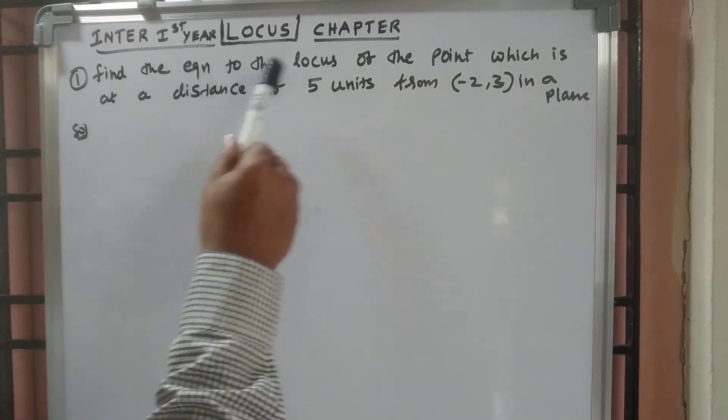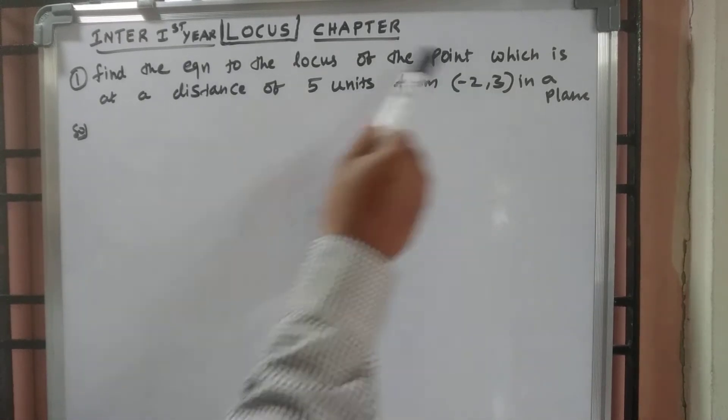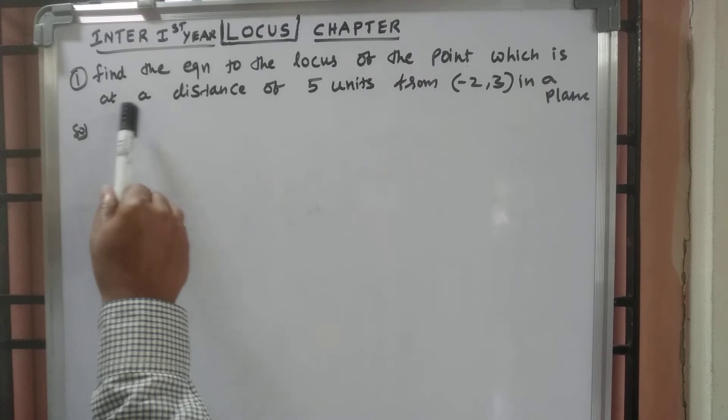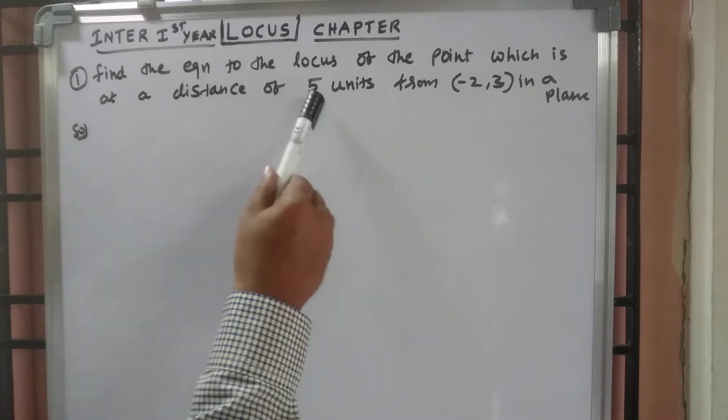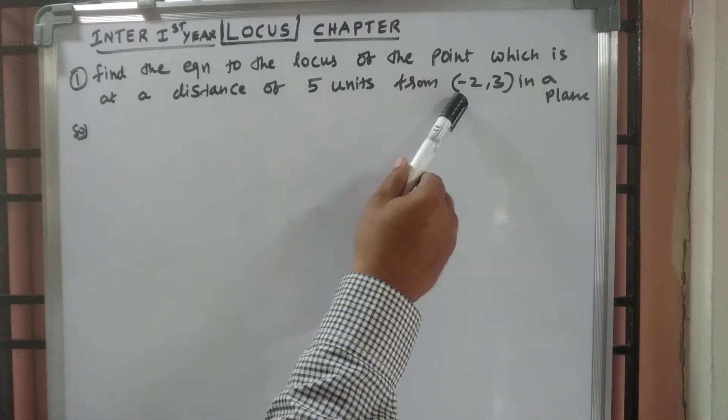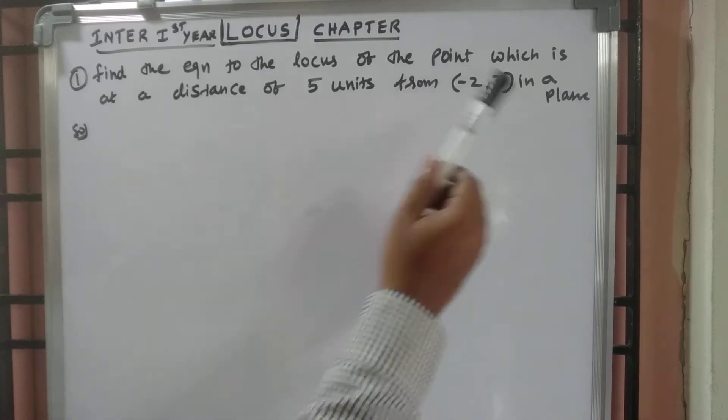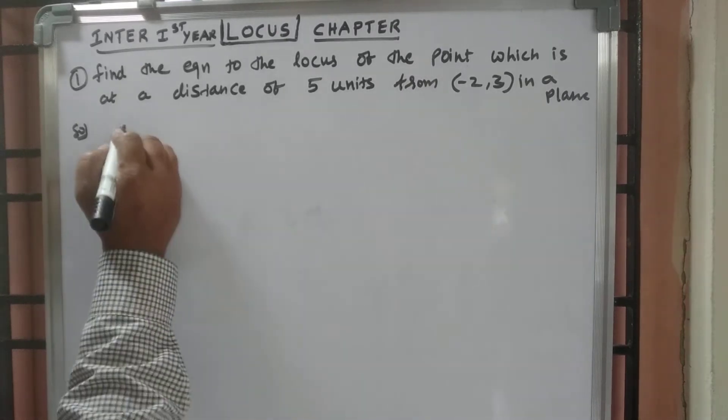Find the equation to the locus of a point which is at a distance of 5 units from minus 2 comma 3 in the plane.